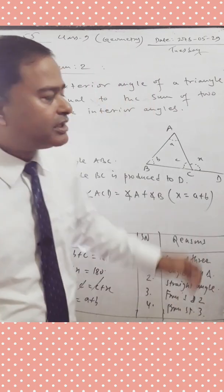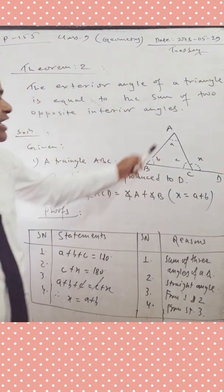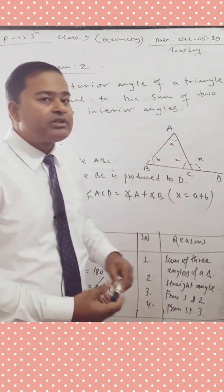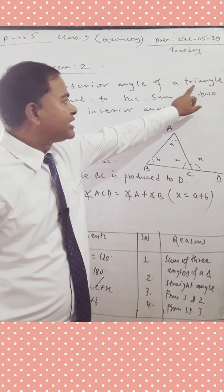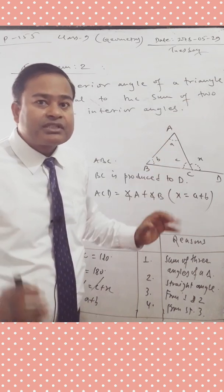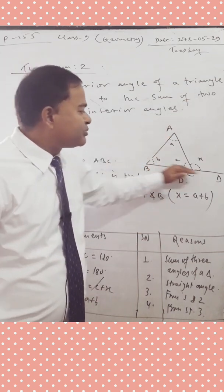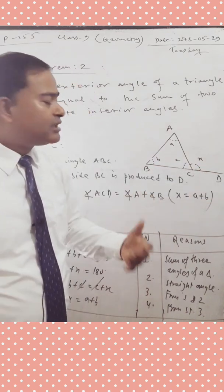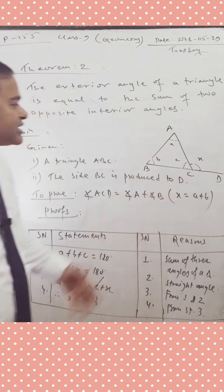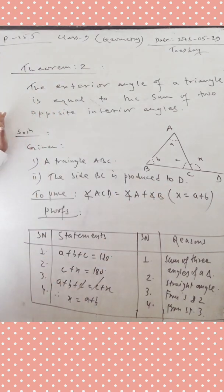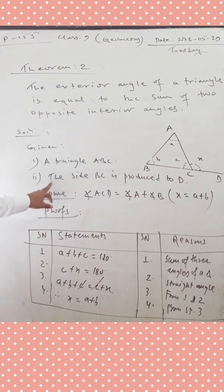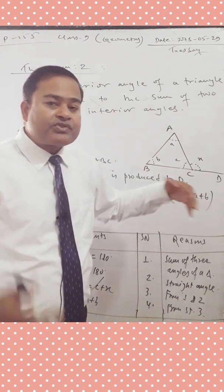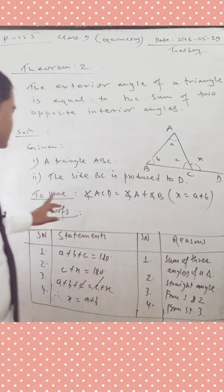Now let us prove Theorem 2. First we draw triangle ABC. According to the theorem, we produce side BC to D so that one exterior angle is formed. So we are given triangle ABC — I have already drawn the figure to save time — and side BC is produced to D, giving us the exterior angle.